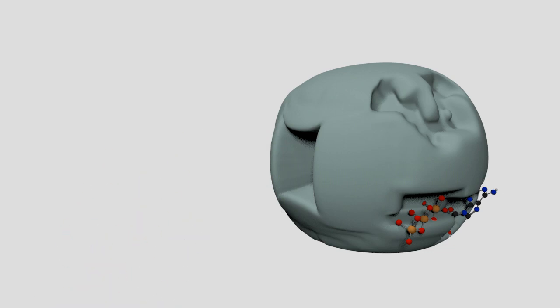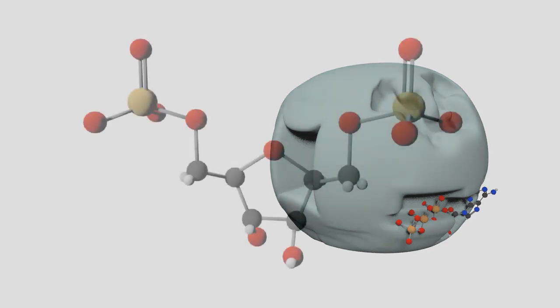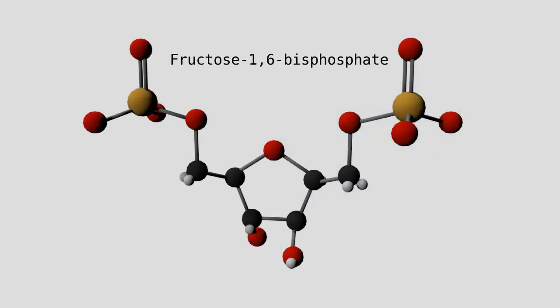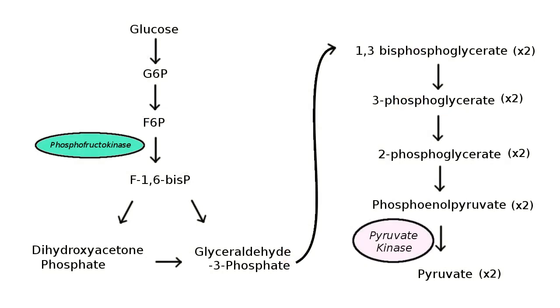Now, there's one more reason why this is such an important step in glycolysis. The product of this step, fructose-1,6-bisphosphate, is an allosteric effector molecule for pyruvate kinase. Now, pyruvate kinase catalyzes the last step of glycolysis. So, when fructose-1,6-bisphosphate binds, it increases pyruvate kinase's activity, and the second half of glycolysis speeds up.